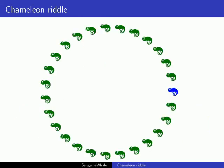All chameleons start with a nice green color except for one, which is blue. How long does it take for all chameleons to be back at their original color?